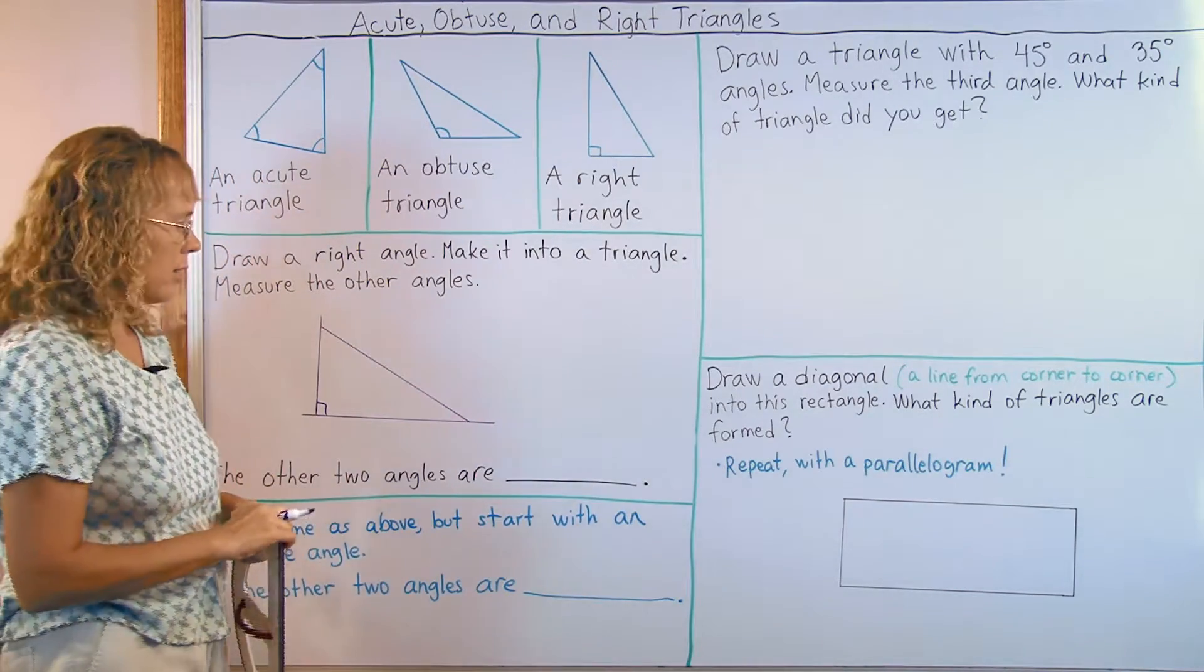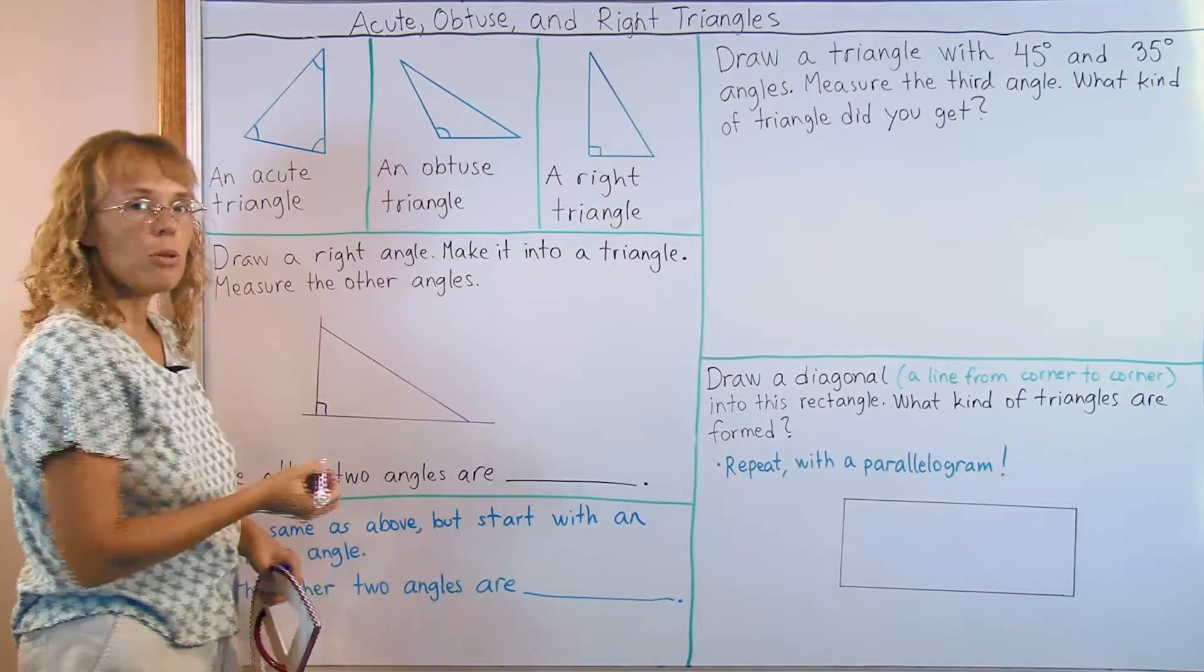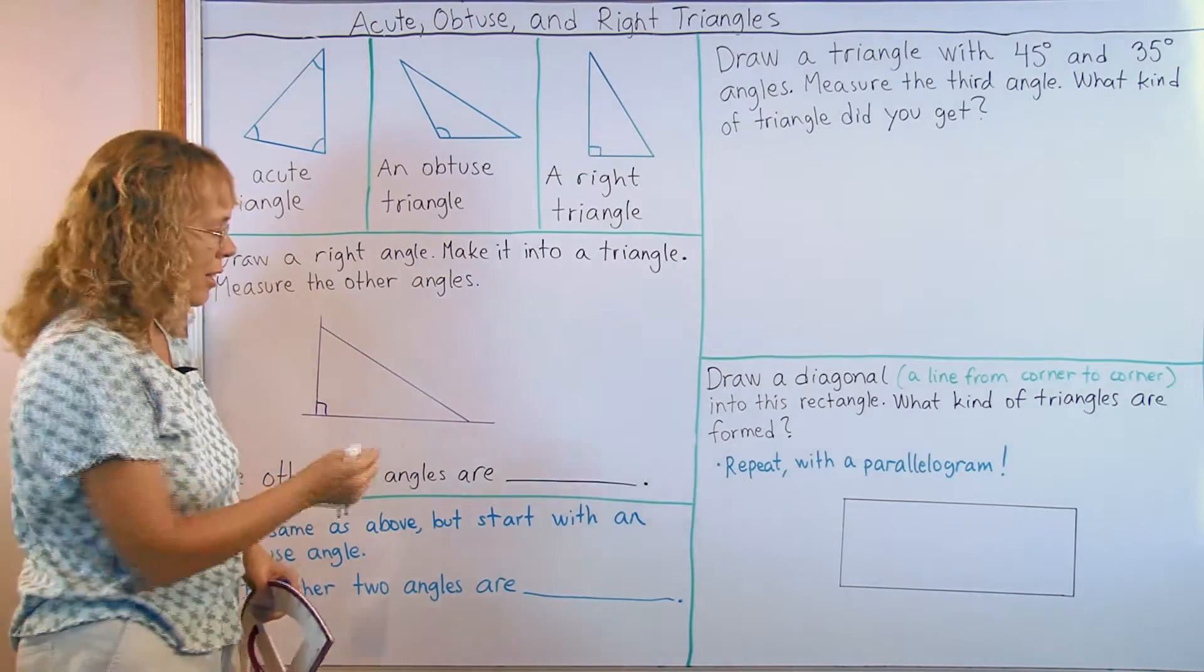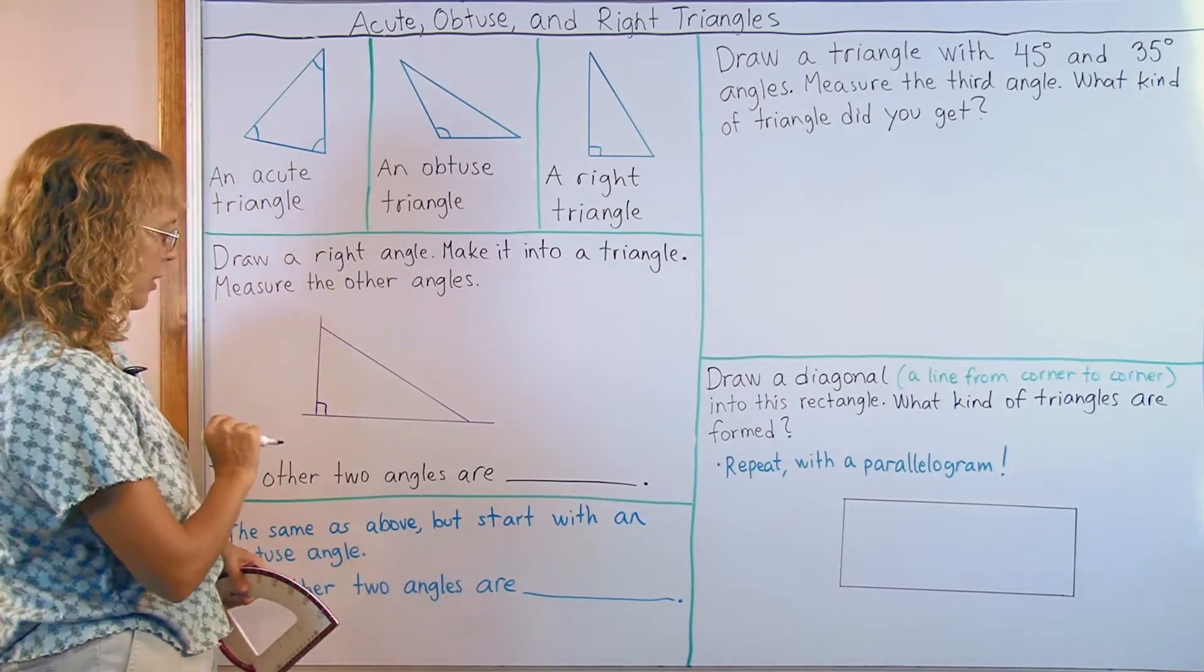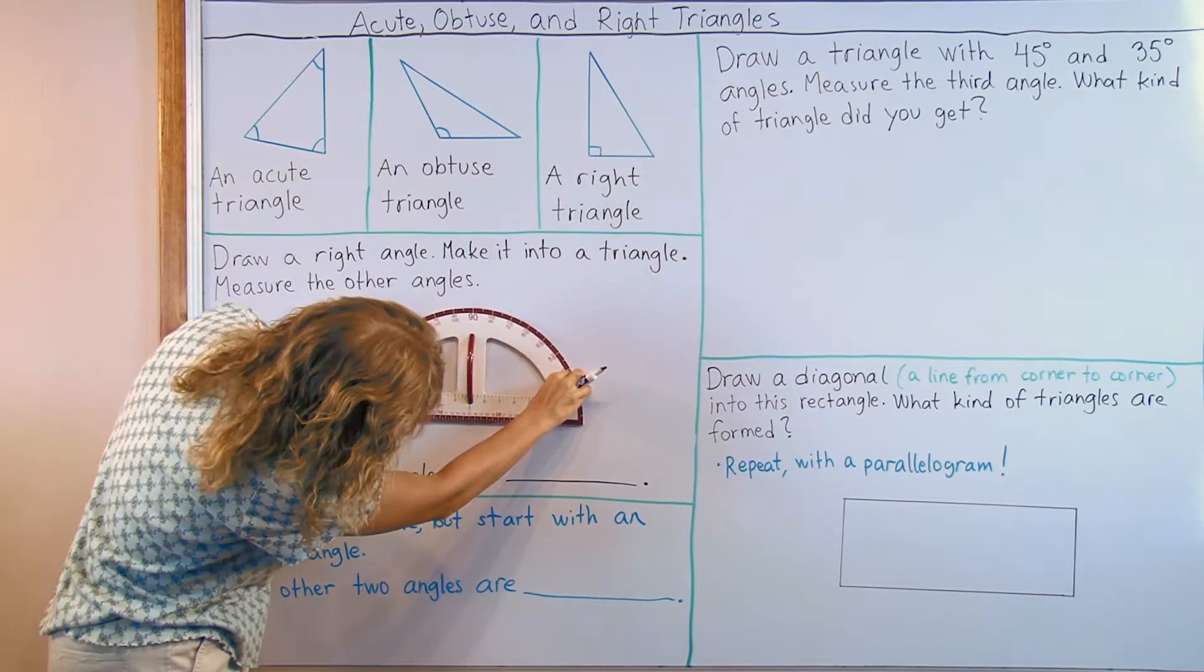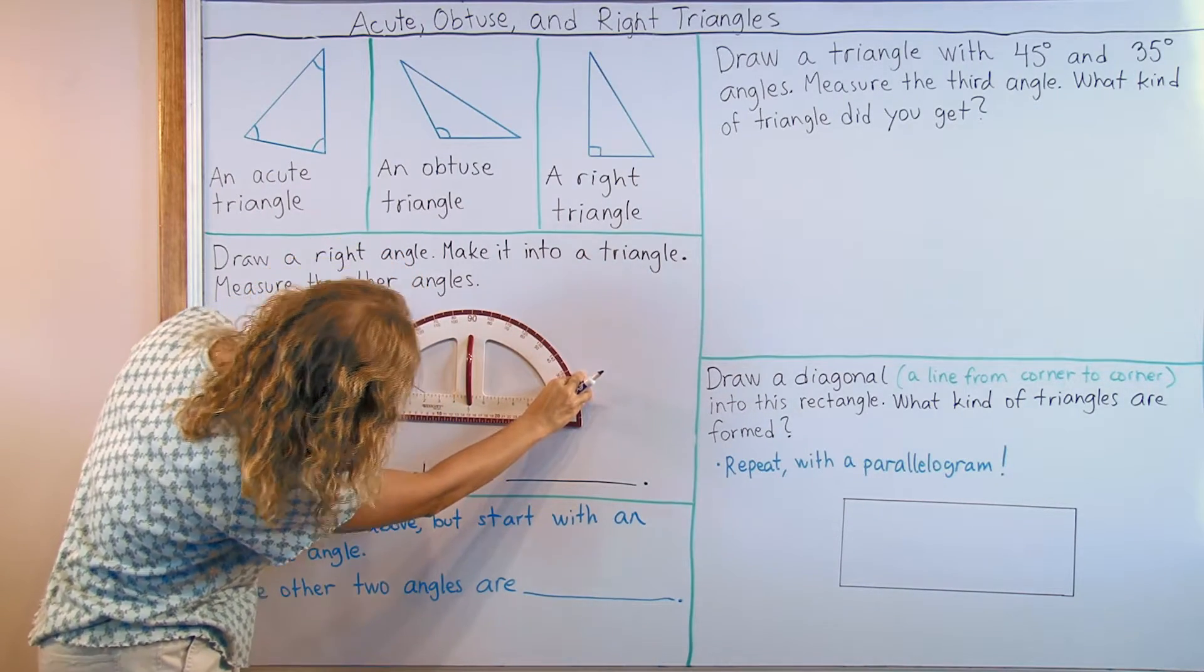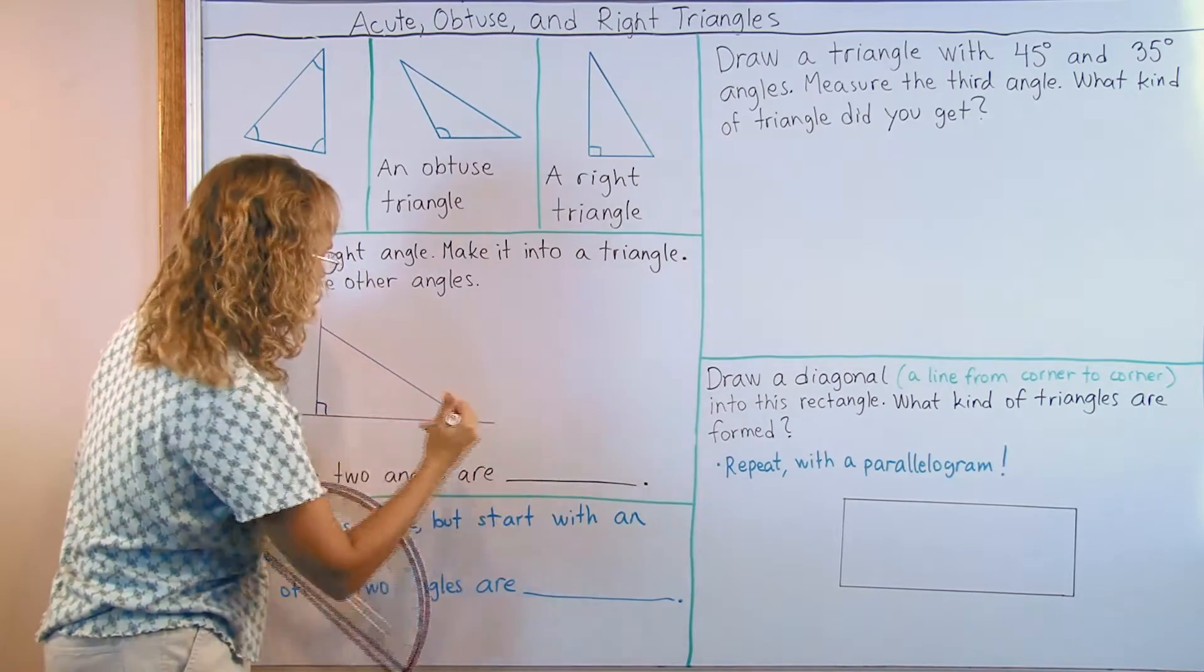And now our task is to measure the other angles. But you can notice, the idea is to notice that this angle and this angle are both going to be acute angles. They are way less than 90 degrees. So I'll measure, just a little over 30 degrees, 32 degrees.